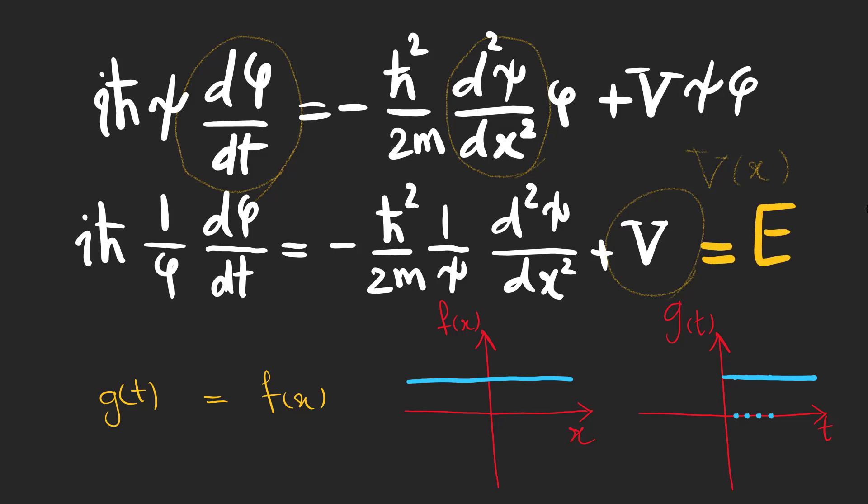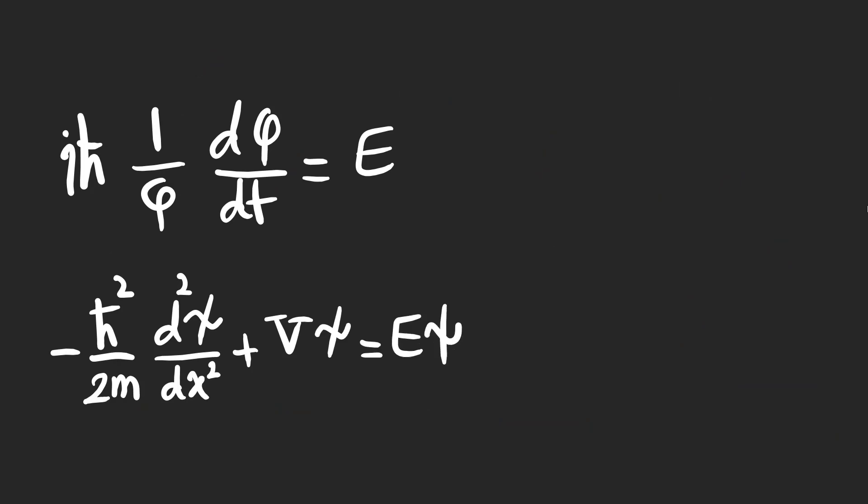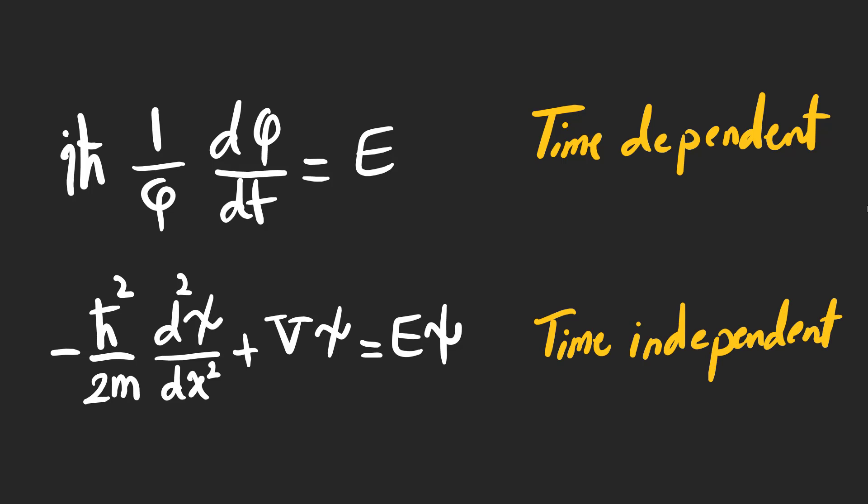We name the constant E. Now we have two equations to solve: a time dependent equation and a time independent equation.